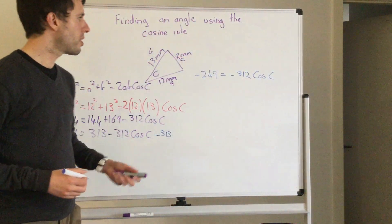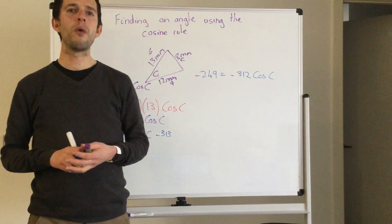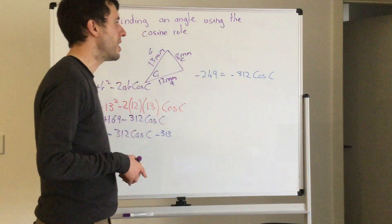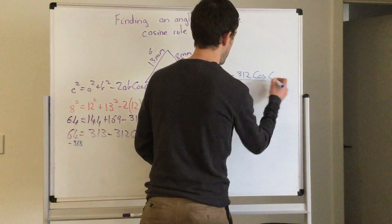Now because I've got a number next to cos there, it means times. So I would like to get cos c by itself. To do that, I need to divide both sides by negative 312.